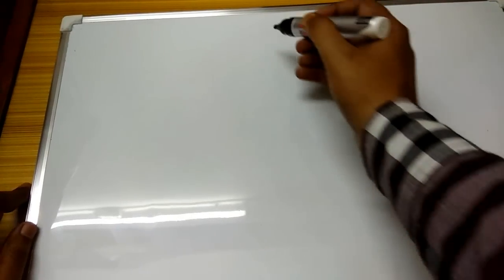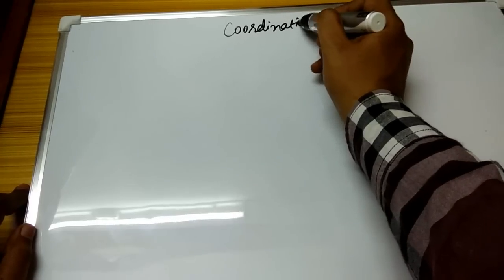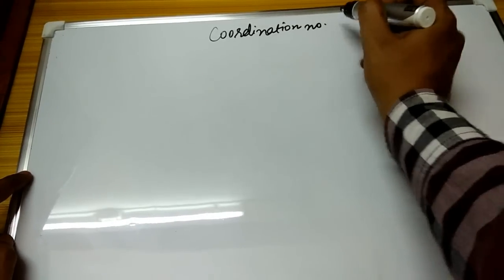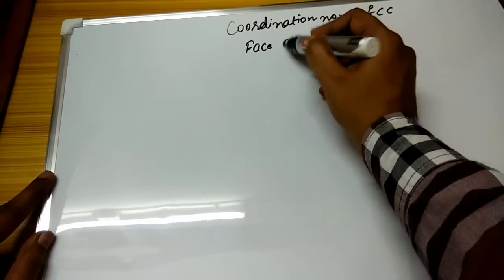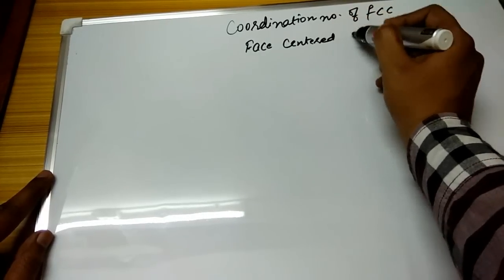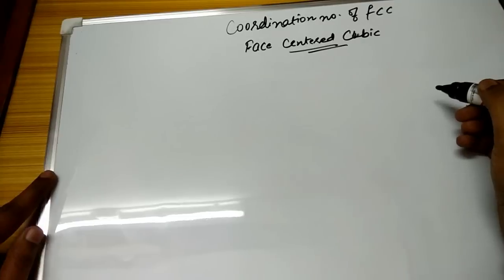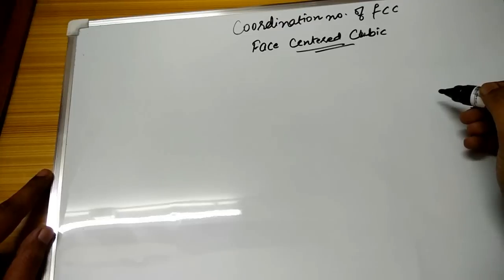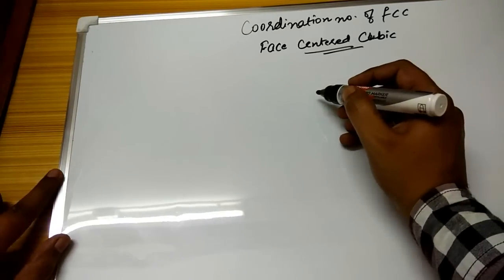Hello everyone and welcome to Rugby Academy. Today our topic is the coordination number of FCC, that is face-centered cubic. In the last two videos I discussed the coordination number of BCC and simple cubic, so similarly we have to make a diagram to understand this further.